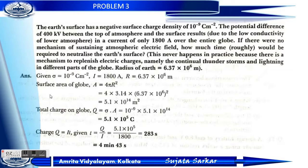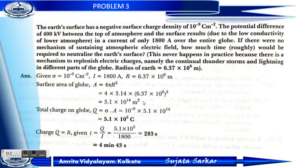Using pi equals 3.14 and R equals 6.37 into 10 to the power 6 meter, after calculating we get the surface area equals 5.1 into 10 to the power 14 meter square. Now we find the total charge of the globe.